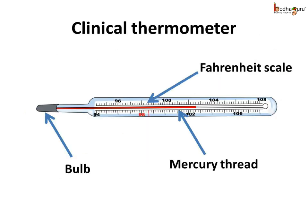Let us see the structure of the clinical thermometer. It is made of a long, narrow, uniform glass tube, and it has a bulb at one end which carries the mercury. This mercury expands when we put the thermometer in the mouth or under our arms to measure the body temperature. On expansion, due to the high temperature, the mercury proceeds through the narrow tube like a thread.